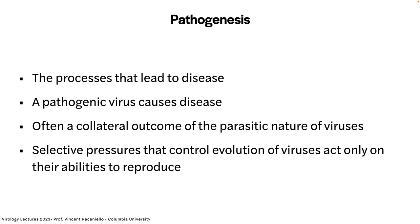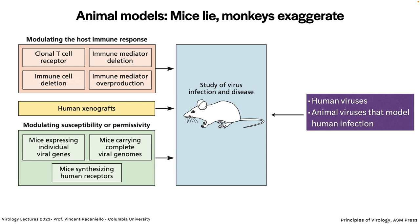The way we study pathogenesis is through animal models in the laboratory. There are many animal models for many different virus infections. About all of them, I have a phrase: mice lie and monkeys exaggerate. No animal model gives you the perfect picture of a human disease, and you should never predict what's going to happen in people from an animal model. This slide summarizes different ways that we can make mouse models for virus diseases.